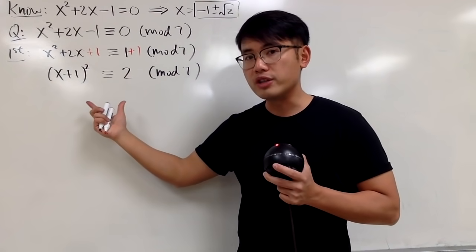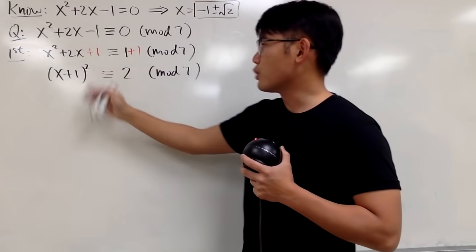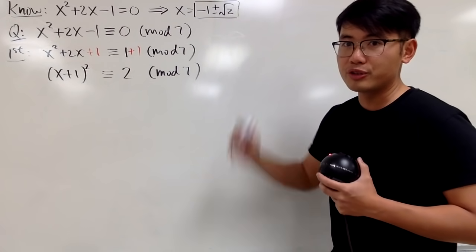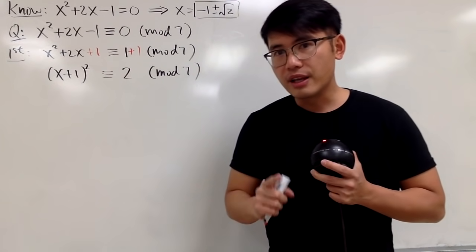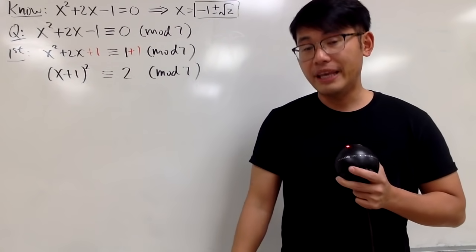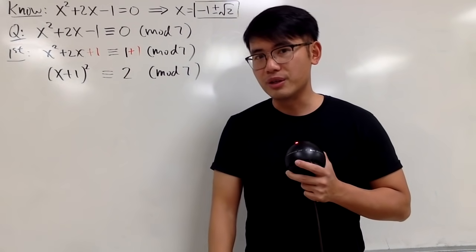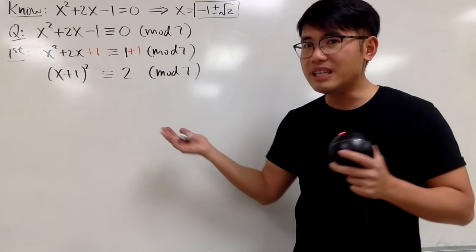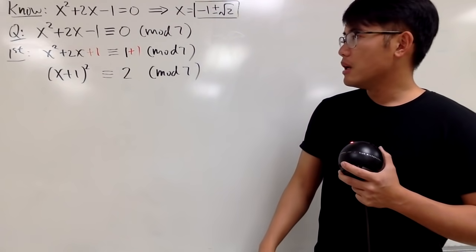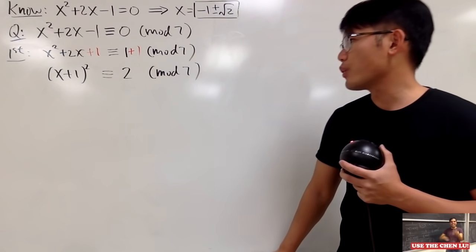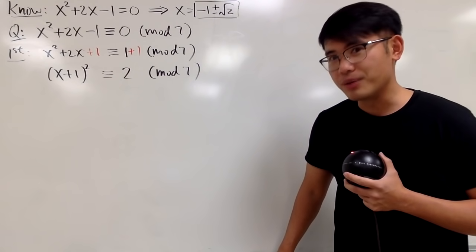Imagine if this was an equation, you would just go ahead and take the square root on both sides, and then put a plus minus, and then minus 1 both sides, and you end up with that. That's pretty much it. But this is a congruence. With that said, you are going to find integer solutions for congruences. x has to be an integer. If you take the square root on both sides, it doesn't really make much sense, right? Square root of 2, cannot do. 2 is not a perfect square.